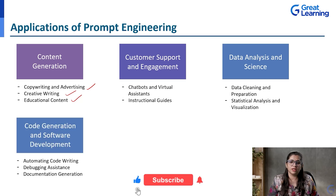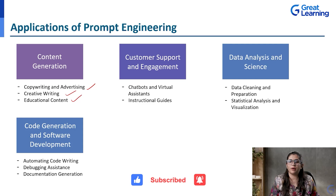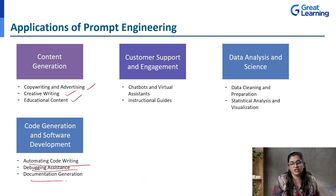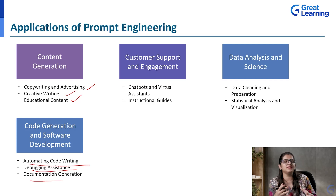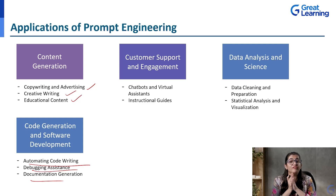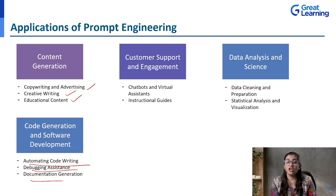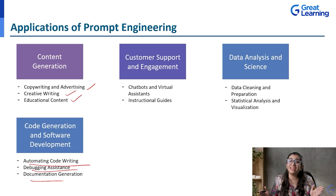Then, another application is code generation and software development — that is automating your code writing, debugging, document generation, and documentation. Using ChatGPT or generative models, they can make your life easy. They can generate code for you, but you have to be very specific and clear about what you want, so that your response from the generative model is customized based on your prompts.